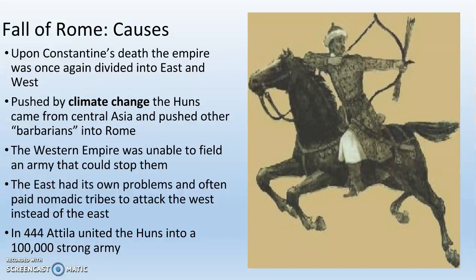This is when things get ugly. Climate change — regardless of whether you believe it is man-made — is absolutely something that happens on Earth over time and has huge historical implications. One of those implications involves the Huns, a group of people living in Central Asia. It got really, really cold due to climate change, so they couldn't grow crops and weren't eating. They got on their horses and moved, because that's what you do when you can't find food — you find it somewhere else.